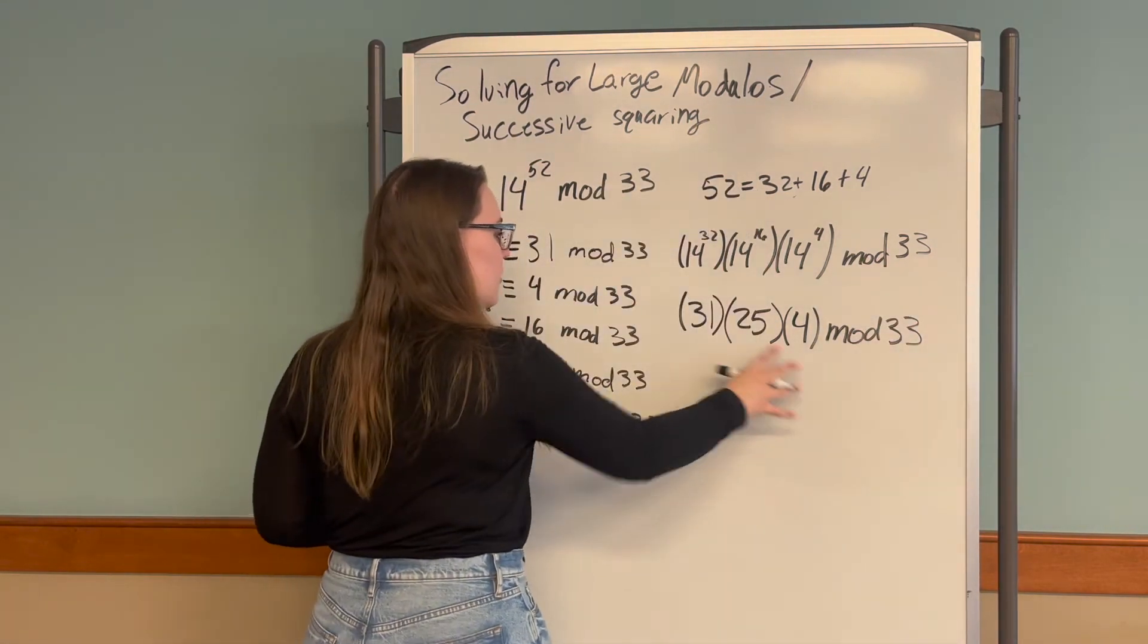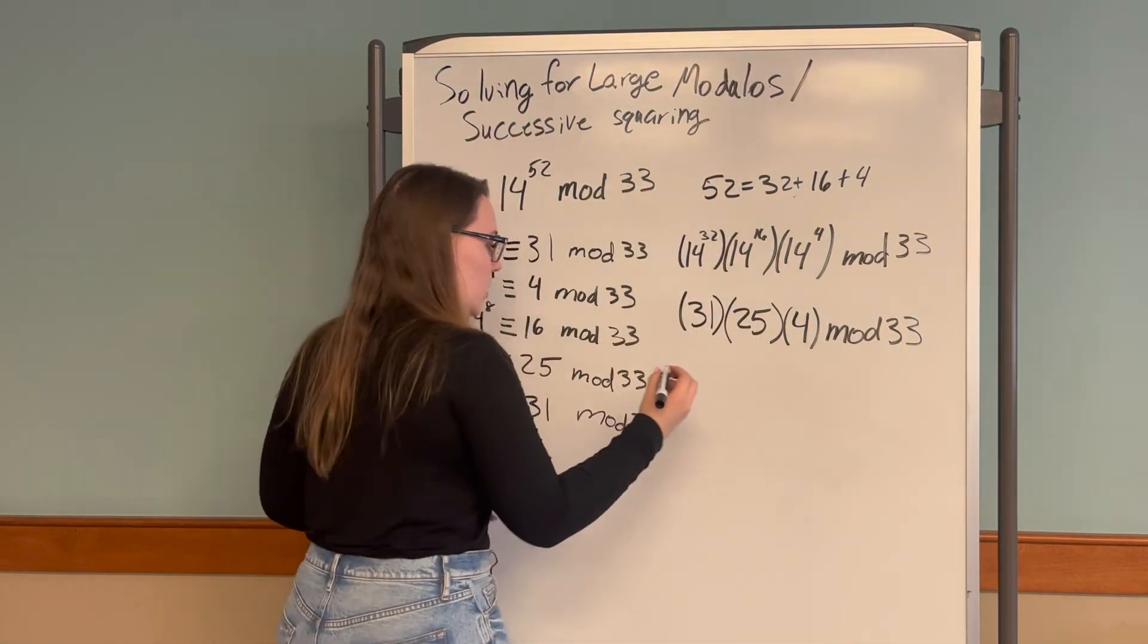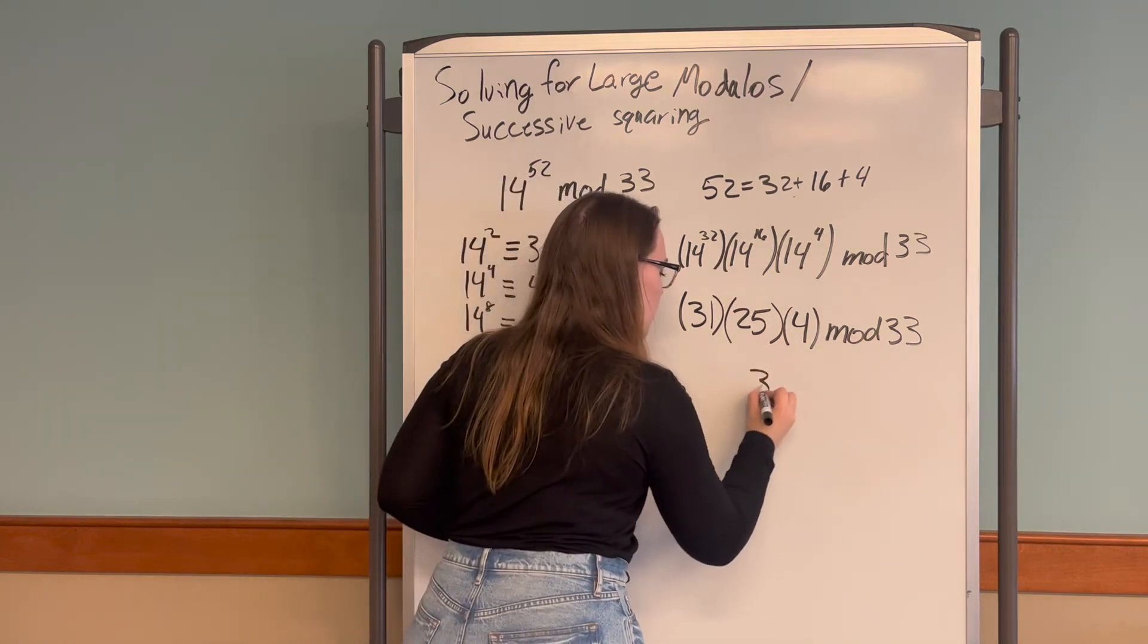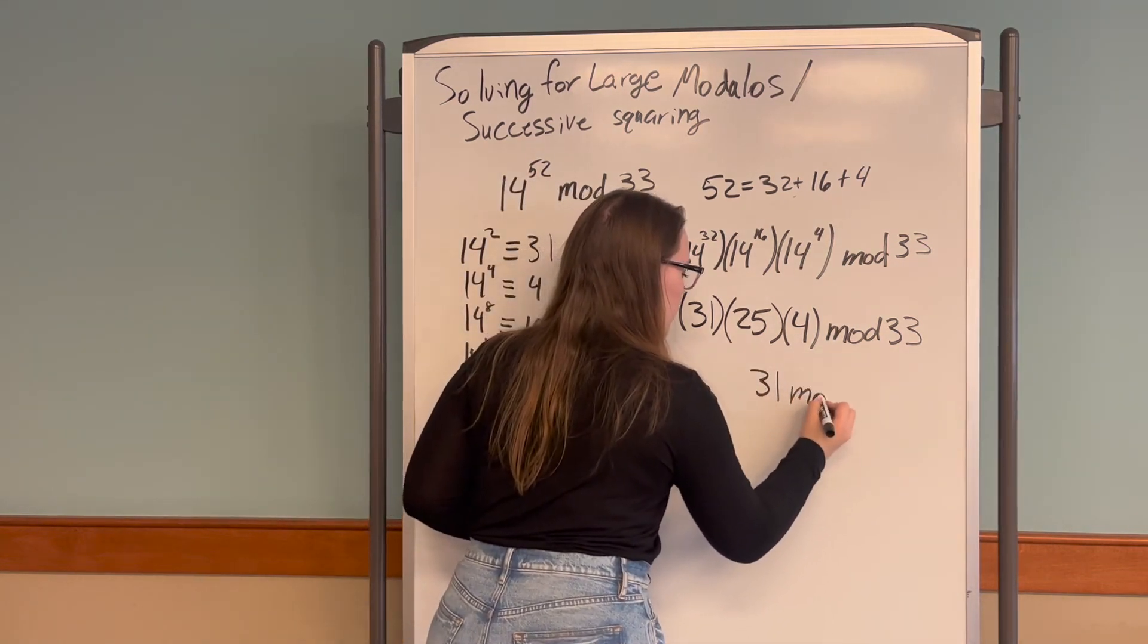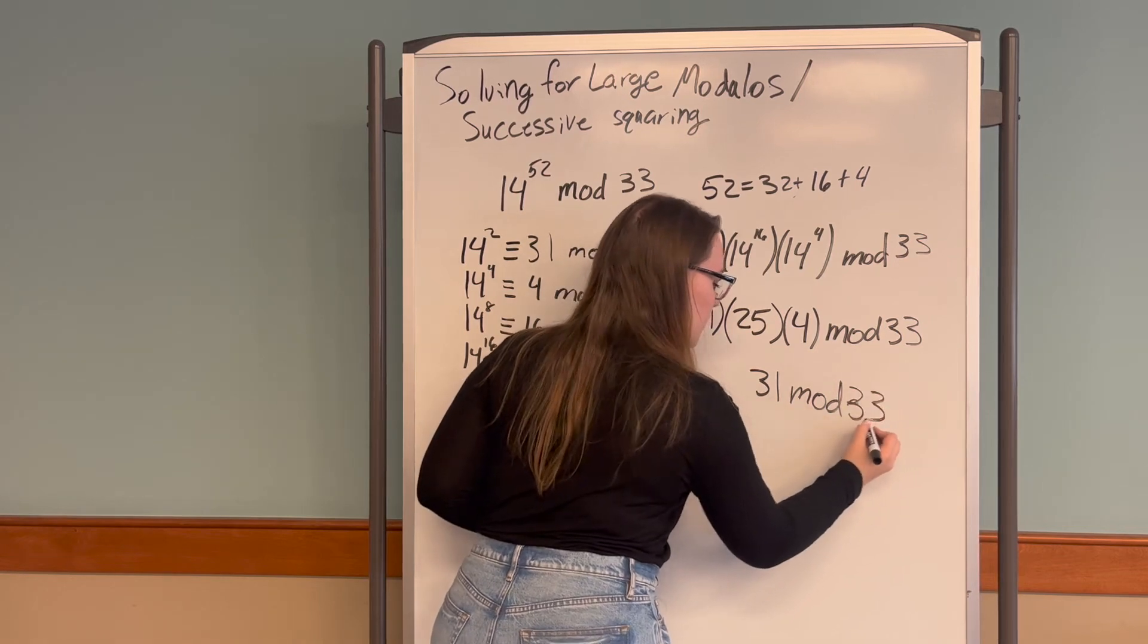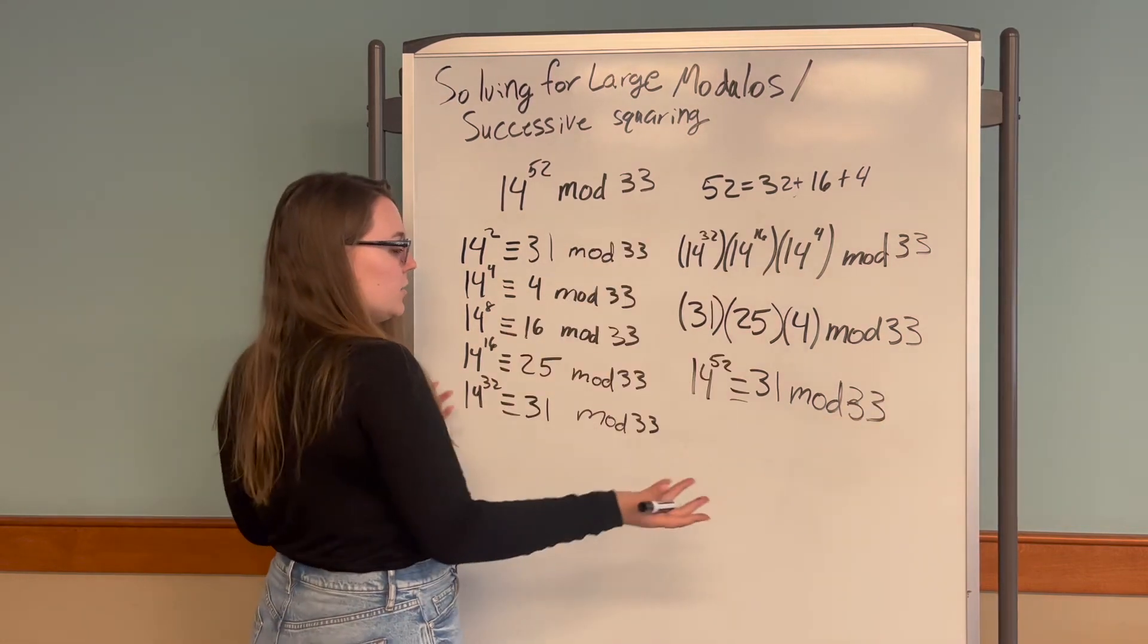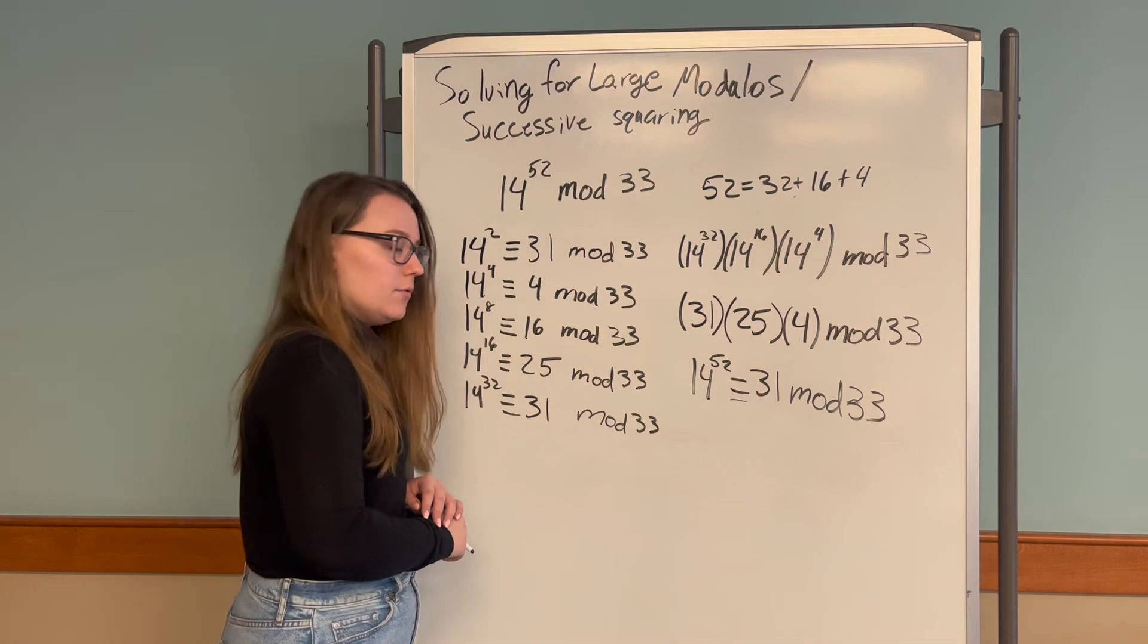We multiply this out, reduce mod 33, and get 31 mod 33. So 14 to the 52 is congruent to 31 mod 33, and we're done.